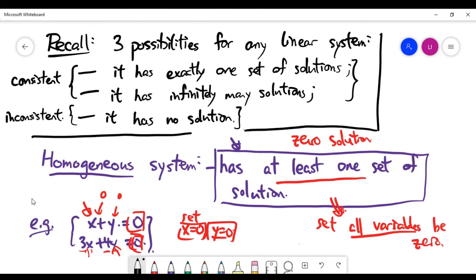For a homogeneous system, I think it is safe to say that only the first two possibilities are possible because we have at least one solution anyway.